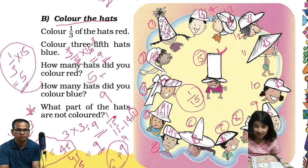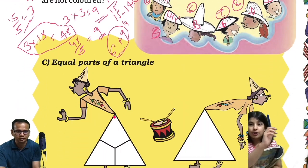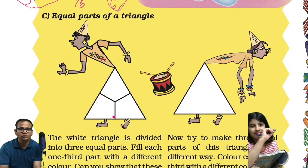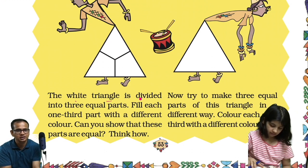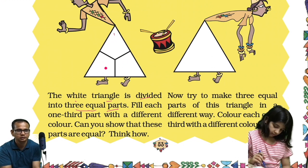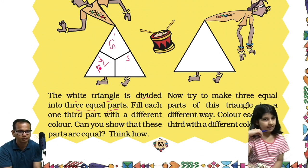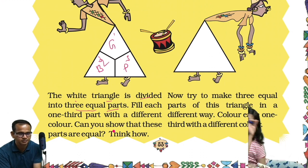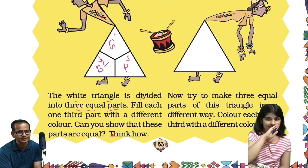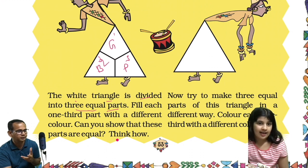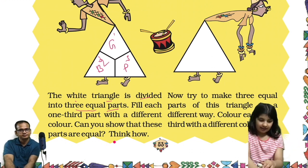This is the hardest question — equal parts of a triangle. If you are able to answer, do subscribe. If you are not able to answer, then like the video. The white triangle is divided into three equal parts — one here, second here, and third here. Fill each one-third part with a different color. Can you show that these parts are equal? Think and tell me, Avisha.